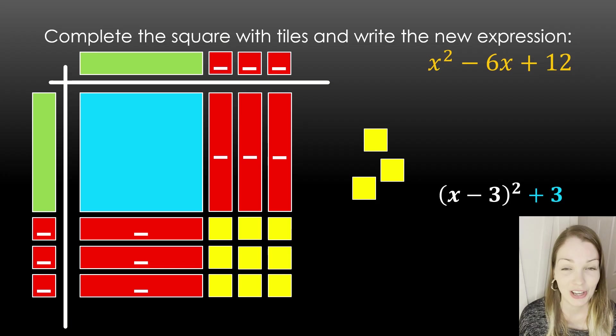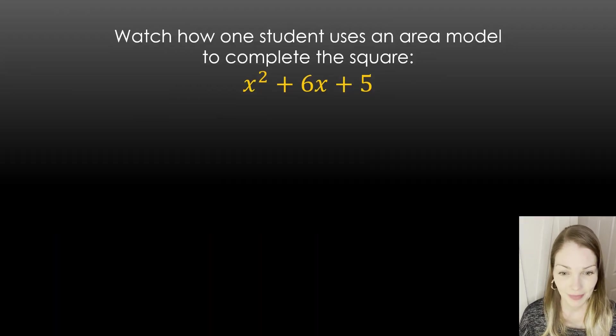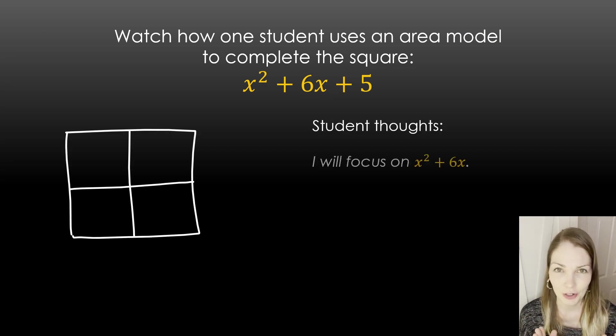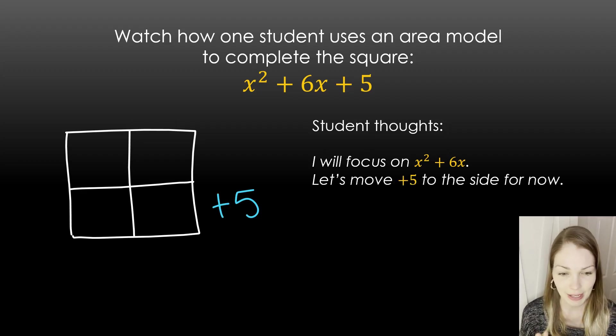All right, let's watch how a student may use an area model to complete the square. All right, so they say I'm going to focus on x squared plus 6x, this first part. Let's move plus 5 over to the side for now. Now they're going to think about where to put things. x squared goes in its usual spot. x times x is x squared.